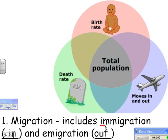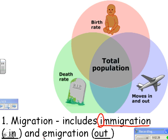Most of you have probably heard the word immigration because it can be a political thing — politicians talk about illegal immigrants, which means people moving into your country from different countries. And so immigration could mean how many deer or how many muskrats have moved into the area. Emigration would be moving out — think I for 'in' and E for 'exit'.